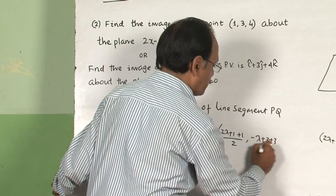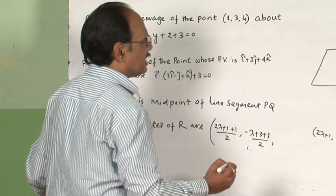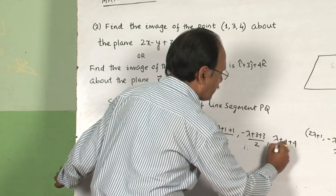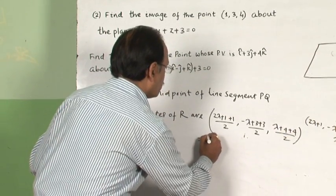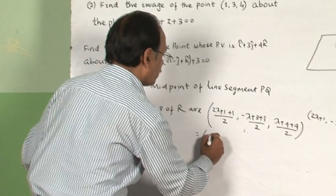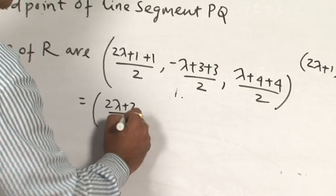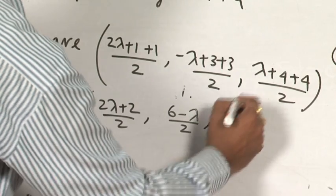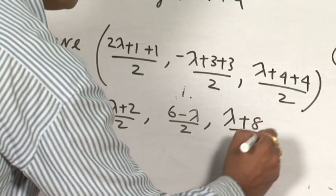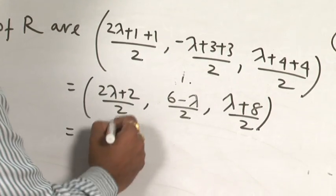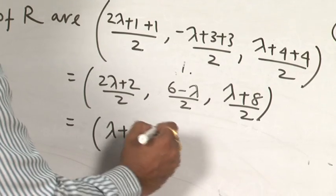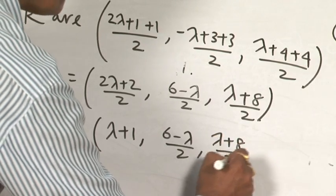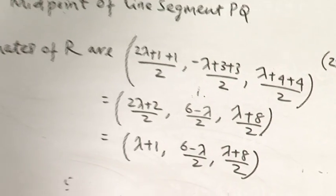The midpoint R has coordinates: (2λ+2)/2, (6-λ)/2, and (λ+8)/2, which simplify to λ+1, (6-λ)/2, and (λ+8)/2. These are the coordinates of point R.